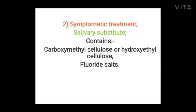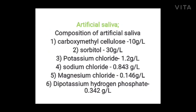Symptomatic treatment involves salivary substitutes containing carboxymethyl cellulose or hydroxyethyl cellulose, fluoride salts, and artificial saliva. The composition of artificial saliva is: carboxymethyl cellulose 10 g/L, sorbitol 30 g/L, potassium chloride 1.2 g/L, sodium chloride 0.843 g/L, magnesium chloride 0.146 g/L, and dipotassium hydrogen phosphate 0.342 g/L.